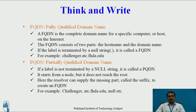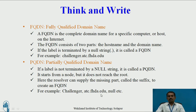Partially qualified domain name: if the label is not terminated by a null string, it is called PQDN. It starts from the node but does not reach the root. The resolver can supply the missing part, called a suffix, to create an FQDN. For example: challengers.atc.fhda, or atc.fhda.edu, or null — these are three examples of partially qualified domain names.